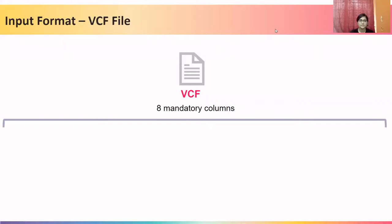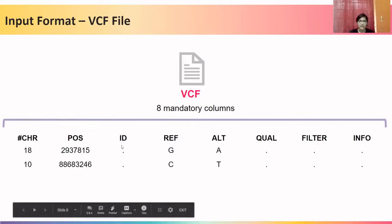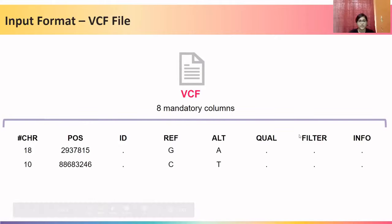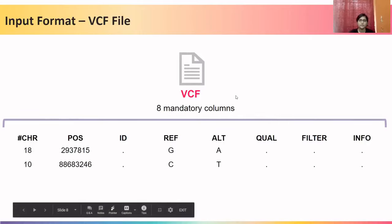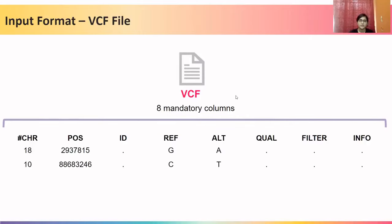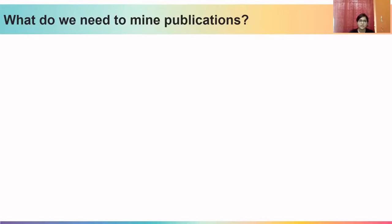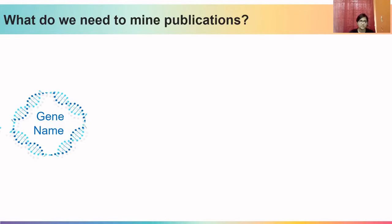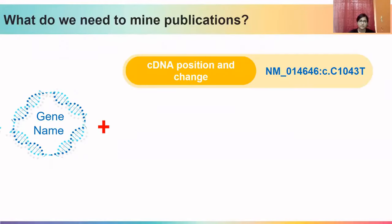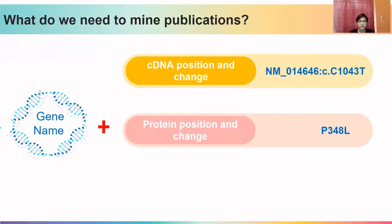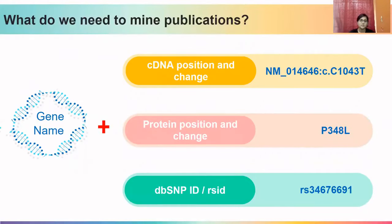To start annotating variants, the first thing we need is the VCF file. The VCF file has eight mandatory columns: chromosome number, position, ID, reference base, alternate base, quality score, filter, and info. This VCF file is uploaded to the VEP server, from which we retrieve four things of prime importance: the gene name, the cDNA position, the protein change, and the dbSNP RSID. With these, we will mine the publications.